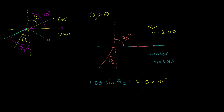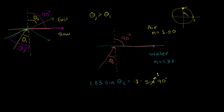Now, what is the sine of 90 degrees? To figure that out, you have to think about the unit circle — you can't just do SOHCAHTOA, and this is actually why the unit circle definition is useful. If you think of the unit circle and you go 90 degrees, you are now at the top of the unit circle. The sine is the y-coordinate, and since this is a unit circle, that y-coordinate is 1. So the sine of 90 degrees is 1.